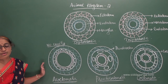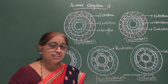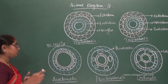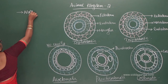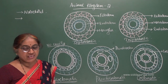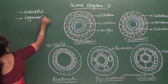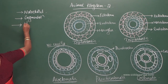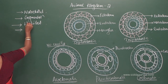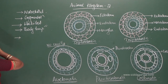We had completed the basis of classification up to body cavity. We will now study more points: the notochord, segmentation, habitat, body temperature, and development. Finally, we will sum up with a schematic representation. Diploblastic, triploblastic, acoelomate, coelomate, and pseudocoelomate are very important topics that may come in your board exams.